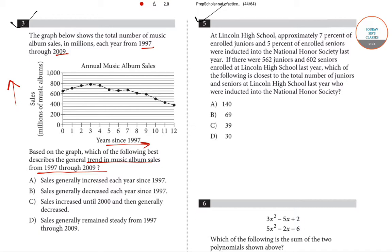Looking at the graph, starting from 1997 till the year 2000, the sales of music albums increased, and after that the sales gradually decreased. Option C says that sales increased until 2000 and then generally decreased — that is our correct answer for question number 3.